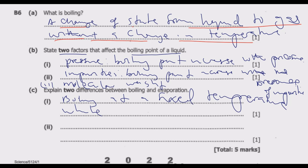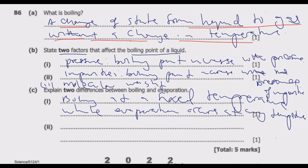Boiling occurs at a fixed temperature — that is the first difference — while evaporation occurs at any temperature. As noted in our definition, boiling occurs without a change of temperature, so there is one specific single temperature at which boiling occurs, especially for a pure substance.